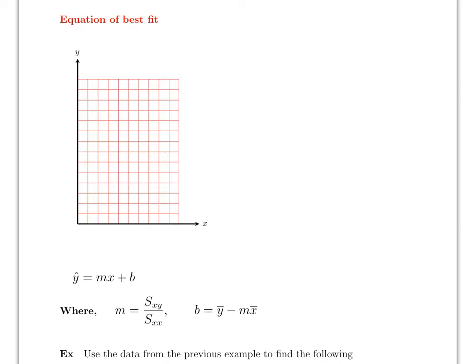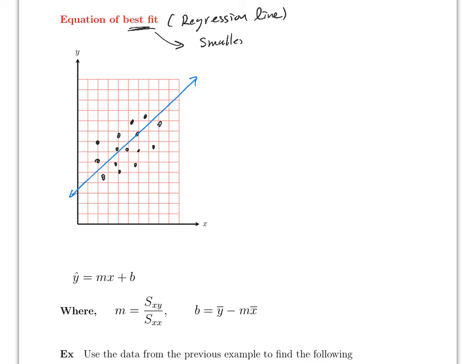Once you find the correlation, the next goal is to find the equation of best fit — also called the regression line. Any line you draw through the data will have some error, so you want the line that has the smallest squared error. This is y-hat (an approximation to y), which requires calculus to derive but the formulas are already given.